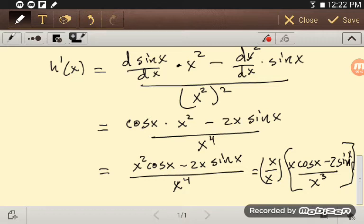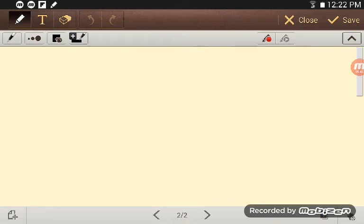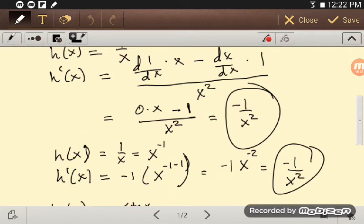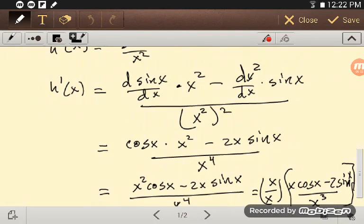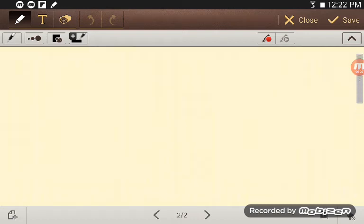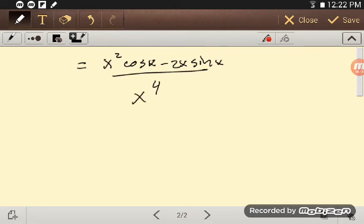As I said, I ran out of room so I need another page. So, what we had was, we had x squared cosine x minus 2x sine x over x to the fourth.